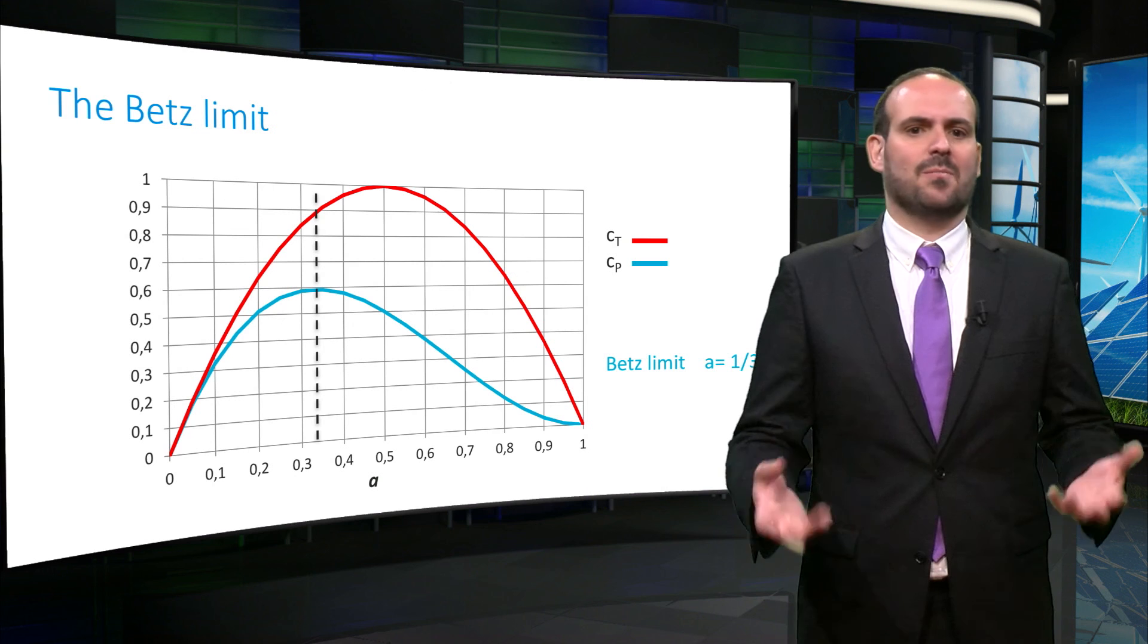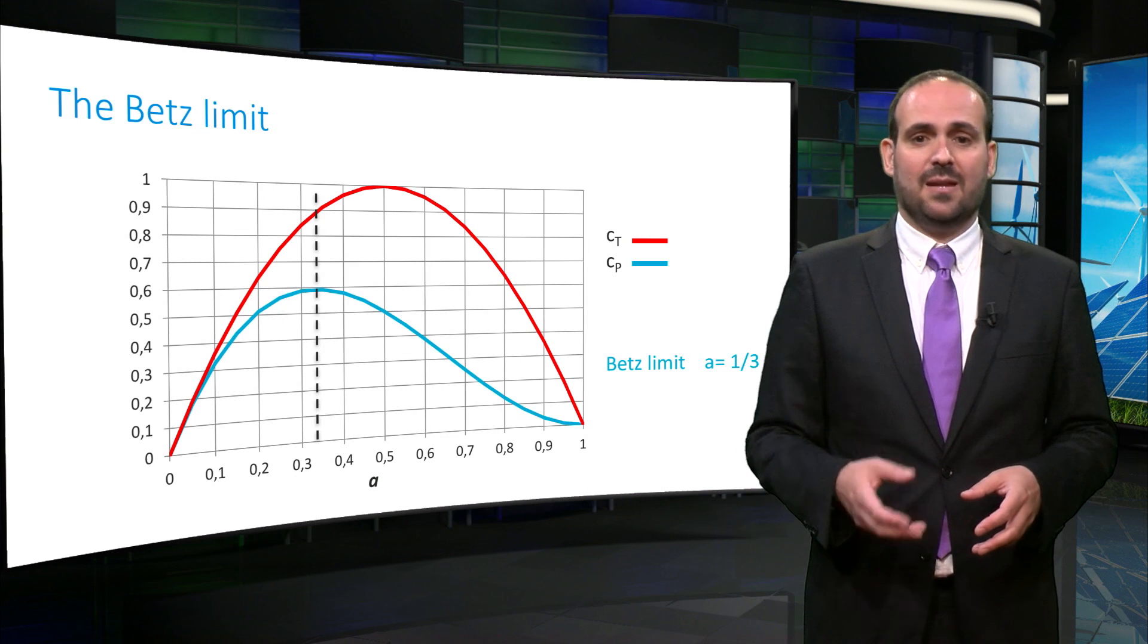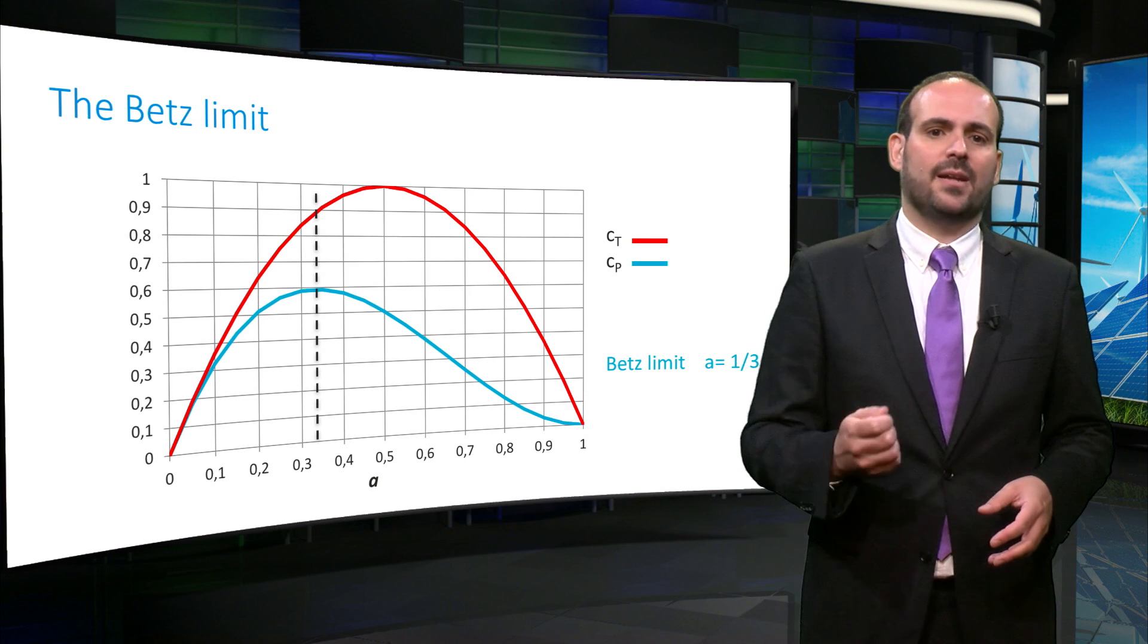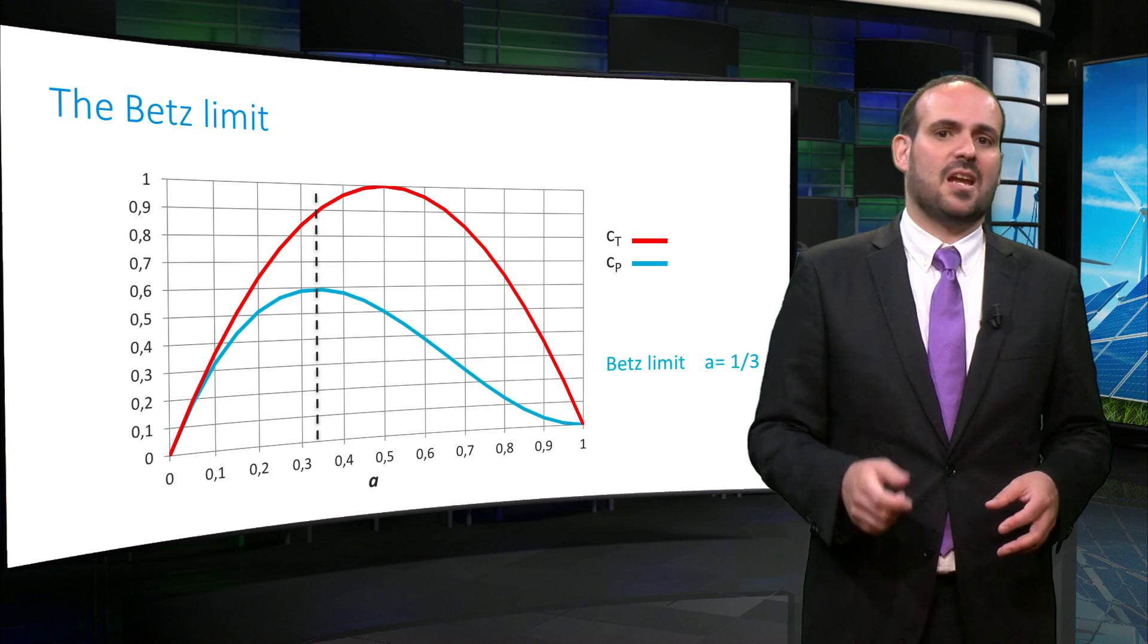This is called the Betz limit, named after the scientists who defined it, and means that at most a single wind turbine can only extract 59% of the power of the incoming wind.